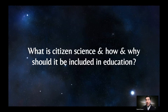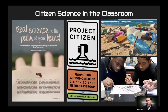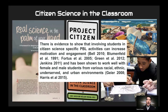What is citizen science, and how and why should it be included in education? Citizen science is connecting professional scientists with average citizens — anyone can collect data, analyze it, and there are even collaboration possibilities to publish. Some refer to it as crowd-sourced research. Citizen science in the classroom has been shown through research that when you involve students in citizen science-specific project-based learning activities, it can actually increase their motivation and engagement. If you're involved in something real with tangible results in the real world, that's probably more motivating than learning from a book. It's also been shown to work well with female and male students from various racial, ethnic, underserved, and urban environments.